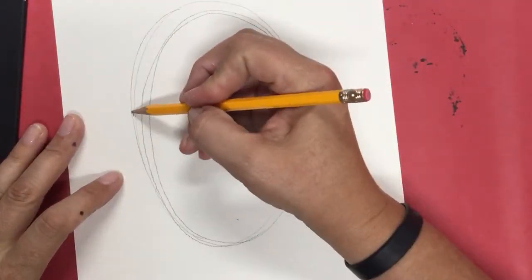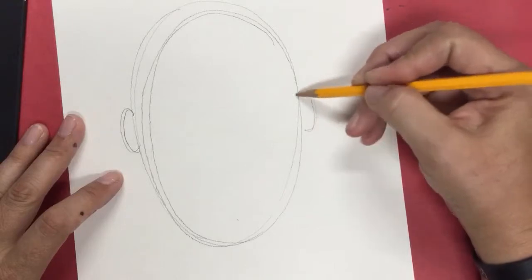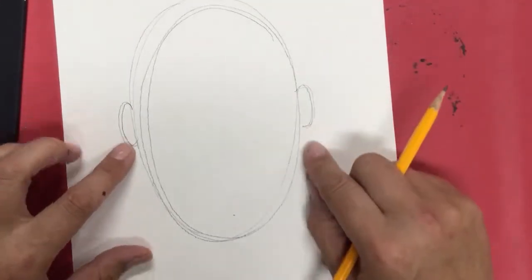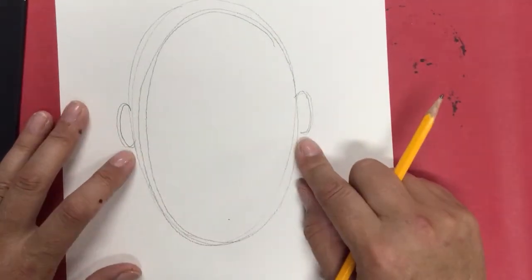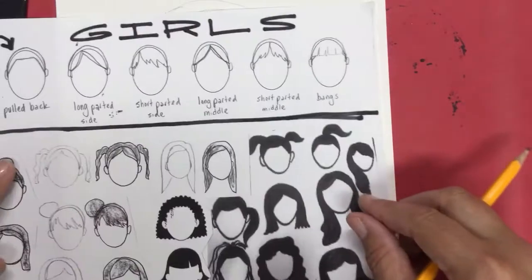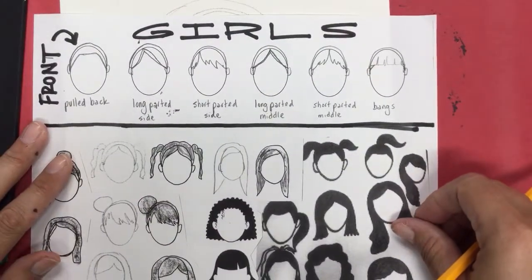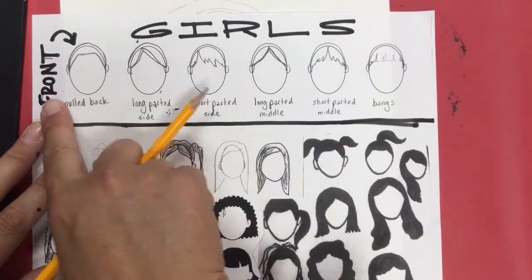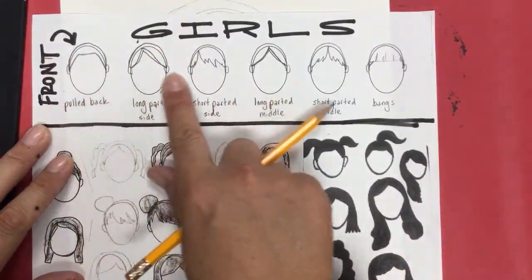So I'm gonna go ahead and draw some ears over here because we all have them, and some of you have hairdos that cover your ears and some of you don't. Now let's start with my girls here because they're usually the most uptight about their hair.